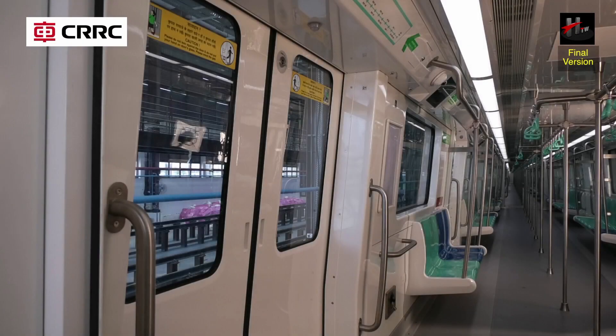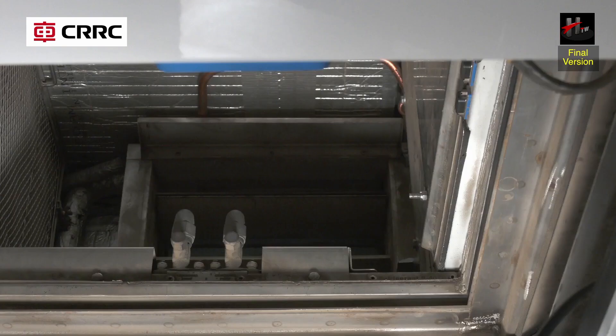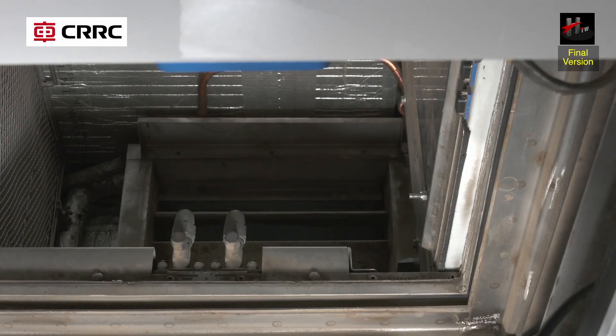The pre-cooling mode is used to bring down the saloon temperature in minimum time when the train set is made ready for service during the hot summer season. The fresh air dampers are closed in pre-cool mode.